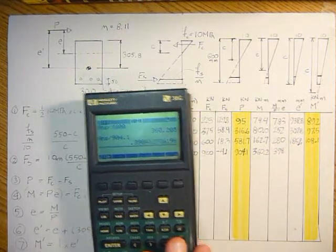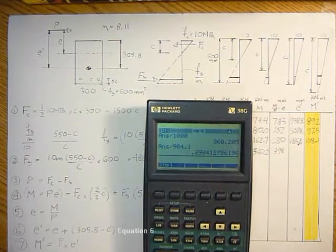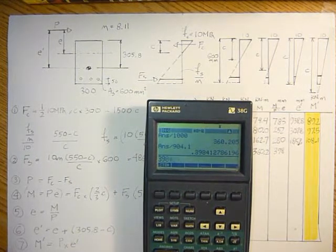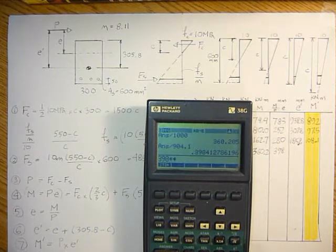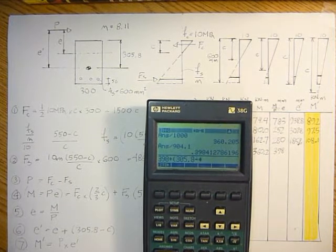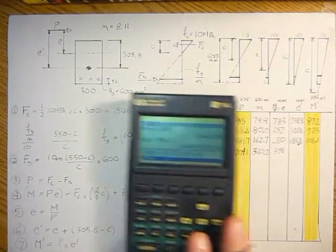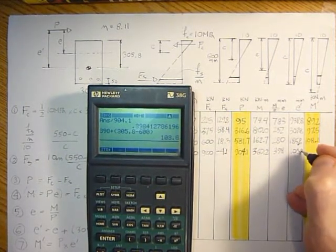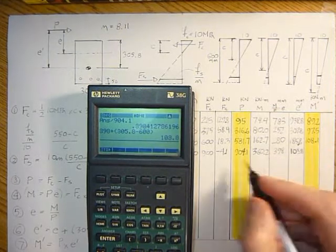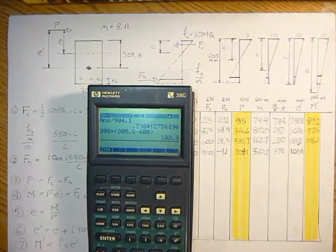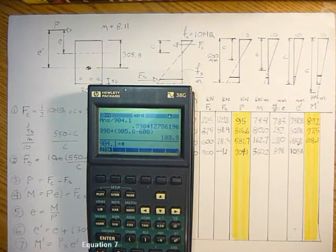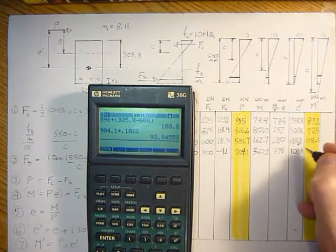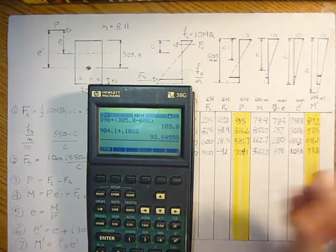And then the E prime would be 398 millimeters, sorry, 398 plus 305.8 minus C, which is 600, that's 103.8. And then the M prime, P times E prime, 904.1 times 0.1038, and that gives me 93.8 kilonewtons meters.